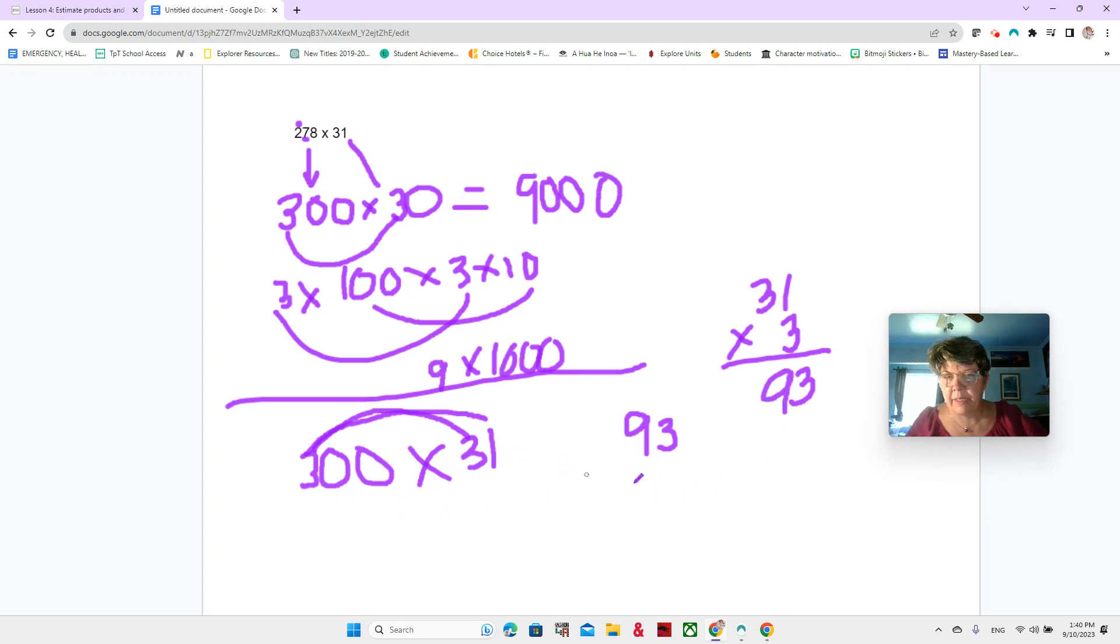Okay. And then we have our two zeros. So that would be 9,300. If you're not there yet, that's okay. I'm just showing you some other things that you might be thinking about. All right. Now, do we think that our estimate is greater than or less than the actual product?